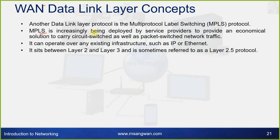ATM is different from others because it uses small fixed-size cells of 53 bytes (48 bytes of data), unlike other technologies which use variable-sized packets. Another data link layer protocol is Multi-Protocol Label Switching (MPLS), which is increasingly being deployed by service providers to provide an economical solution to carry both circuit switched and packet switched network traffic. It can operate over any existing infrastructure such as IP or Ethernet.